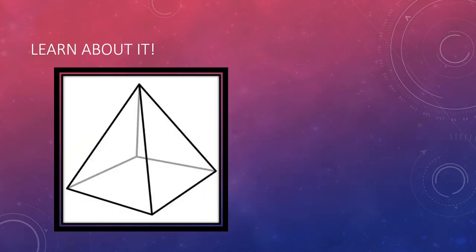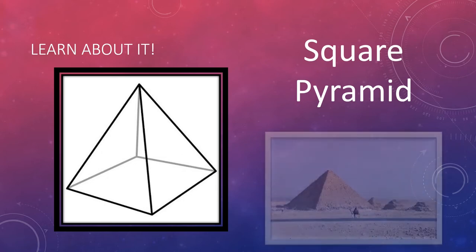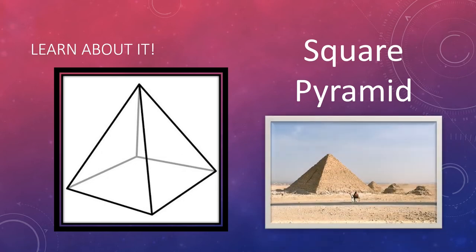This one's similar but a little bit different. Do you know what this shape is called? It's a square pyramid. I wonder how this differs from a triangular pyramid. One of the most famous examples are the pyramids in Egypt.